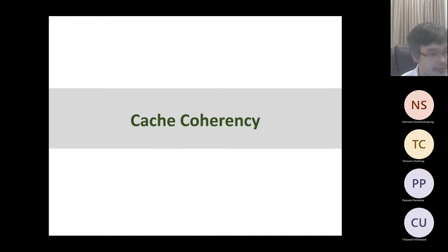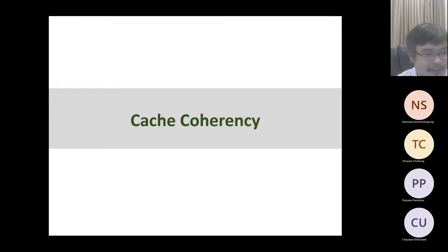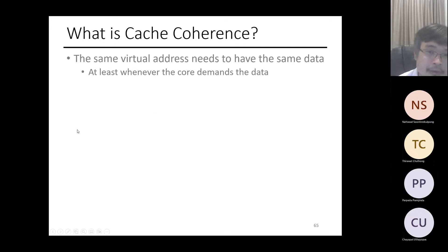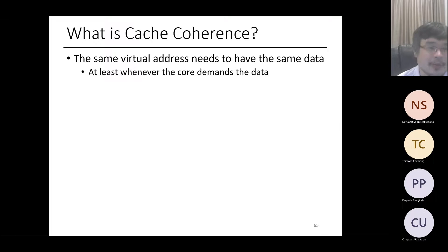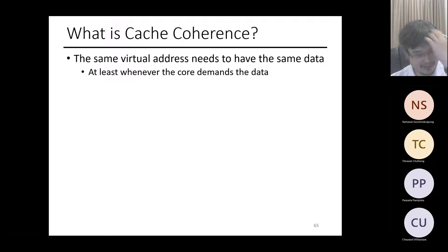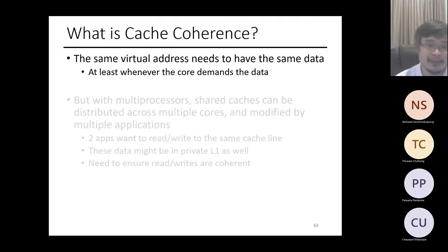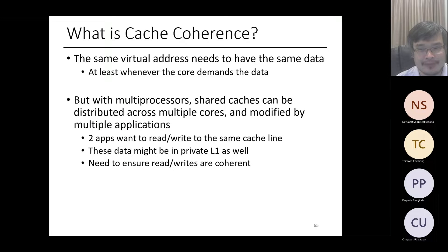Let's continue and talk about one of the most confusing topics in architecture: cache coherence. What is cache coherence? Let's say you have the same virtual address you want to access. Whenever the core demands data, you need to get the most updated version to that core. With multi-processing, you have multiple cores and you have to share cache.